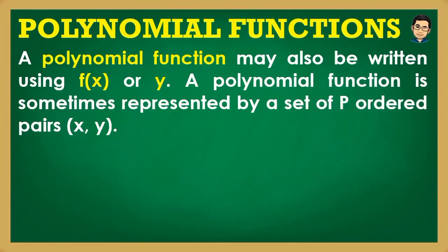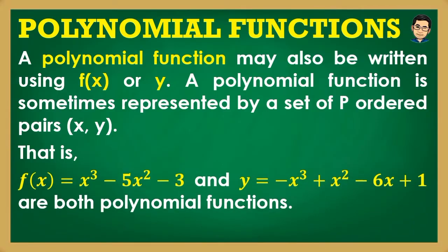A polynomial function may also be written using f(x) or y. A polynomial function is sometimes represented by a set of ordered pairs (x, y). So f(x) = x³ − 5x² − 3 and y = −x³ + x² − 6x + 1 are both polynomial functions. Alin man ang gamitin natin — f(x) or y — considered sila as polynomial functions.